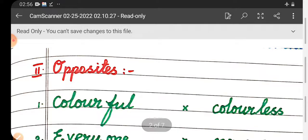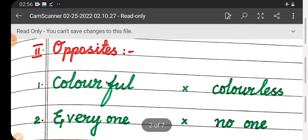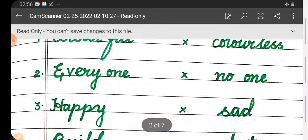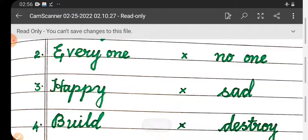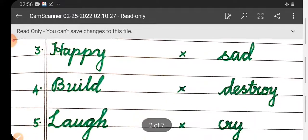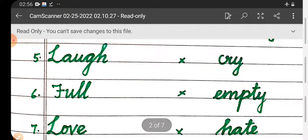Then second roman letter, opposites. First one, colorful - colorless. Second one, everyone - no one. Third one, happy - sad. Fourth one, build - destroy. Fifth one, laugh - cry. Sixth one, full - empty. Seventh one, love - hate.